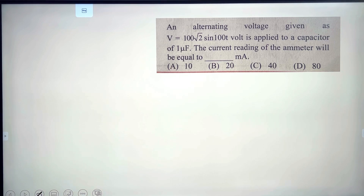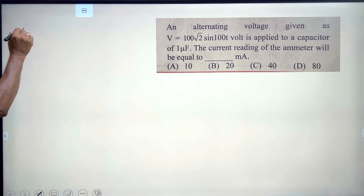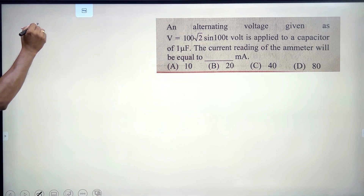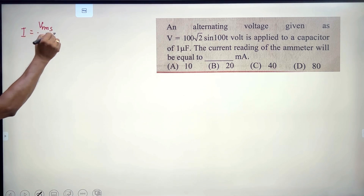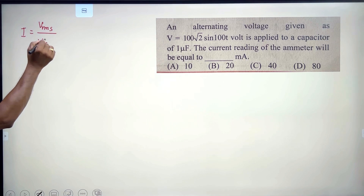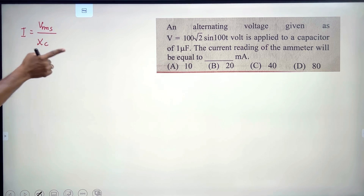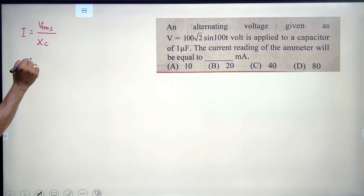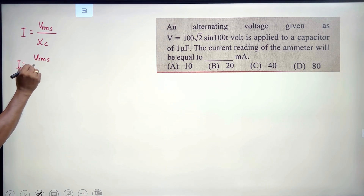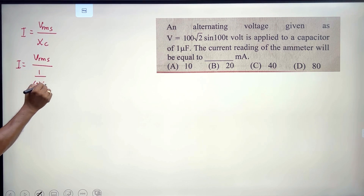Next: an alternating voltage V = 100√2·sin(100t) volts is applied to a capacitor of 1 microfarad. The current reading of the ammeter will be the RMS current, I_rms = V_rms / X_C, where the capacitive reactance X_C = 1/(ω·C).